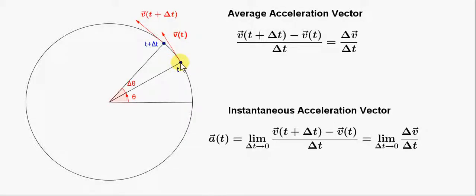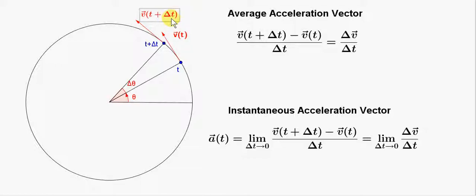So the object moves from here to here. At time t, the velocity of the object is v of t. We know that that velocity vector is tangential to the circle. And at time delta t later, the velocity of the object is given by v of t plus delta t. These two velocity vectors are different because they point in different directions. The magnitudes are the same because we're dealing with uniform circular motion.